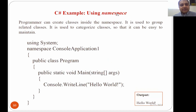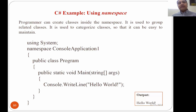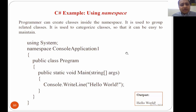Using namespace, a programmer can create classes inside a namespace. It is used to group related classes. If you want to categorize classes, you need a namespace — it helps you maintain a collection of similar or related classes under one namespace umbrella. This makes it easy to maintain code, and the programmer doesn't need to worry about keeping similar types of data together, as the namespace handles that organization.